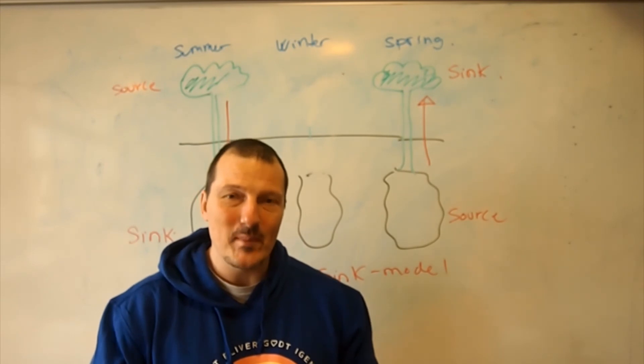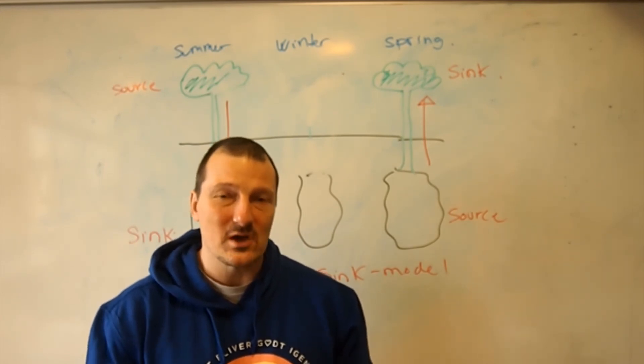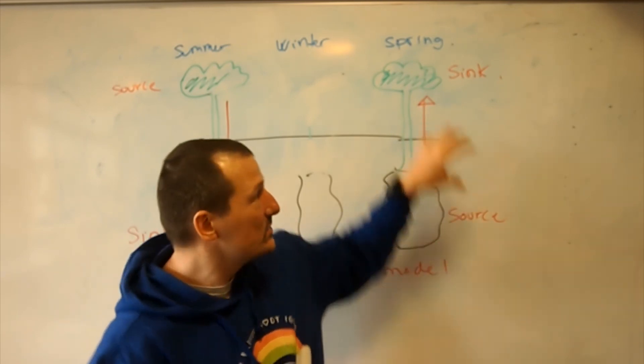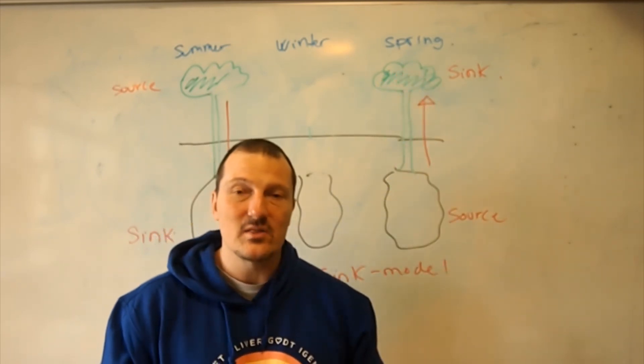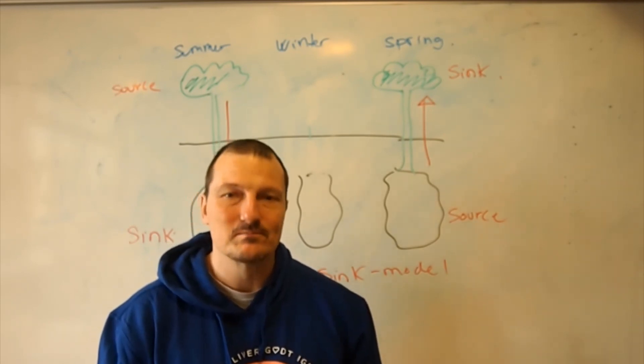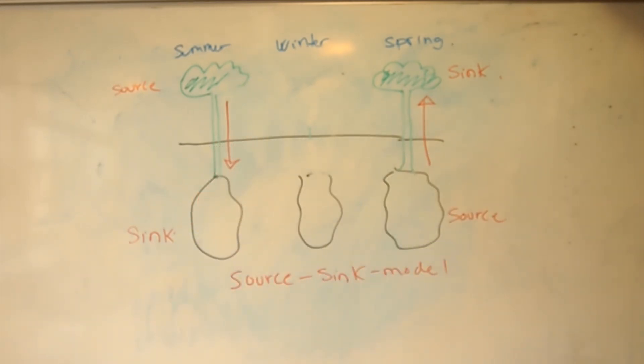So this way we can change between one being the source and the other being the sink during the year. So just a little mention on how we move the other stuff around in the plants. And remember, the xylem moves the water, so this movement here is done in the phloem, where we move the amino acids, the carbohydrates and so on.